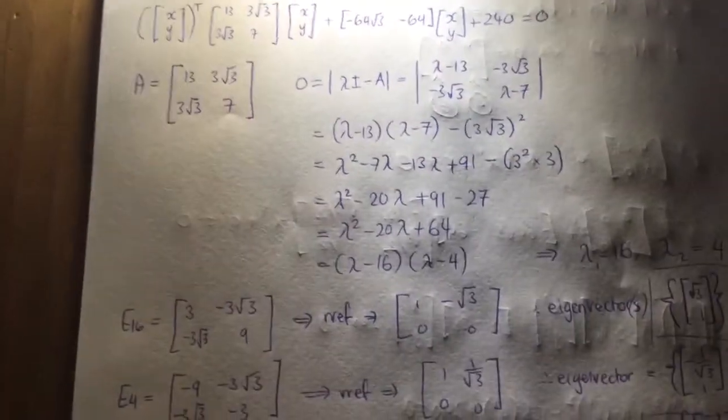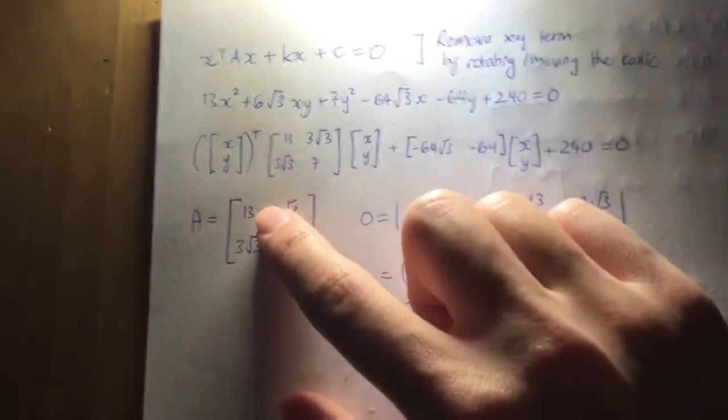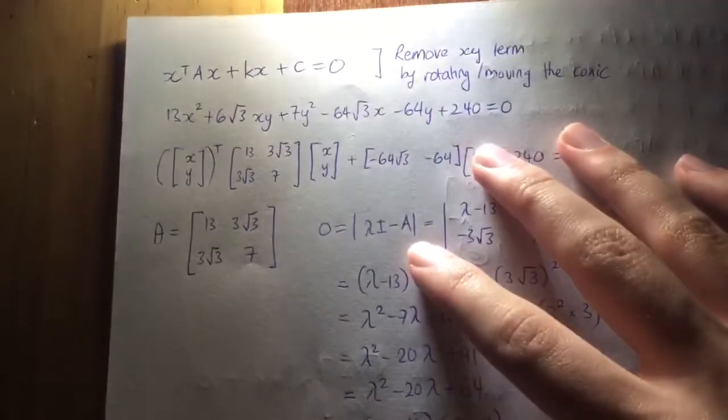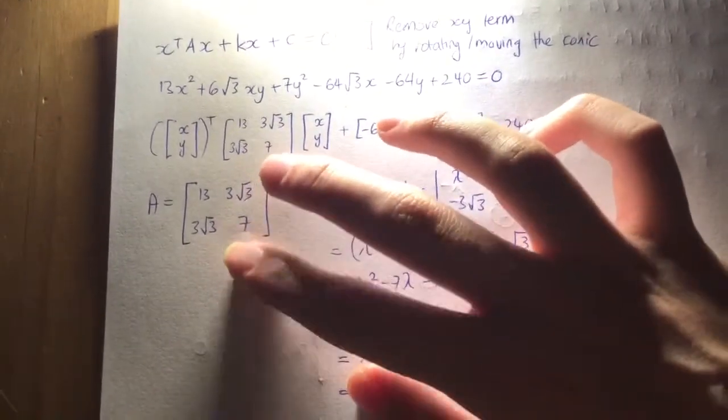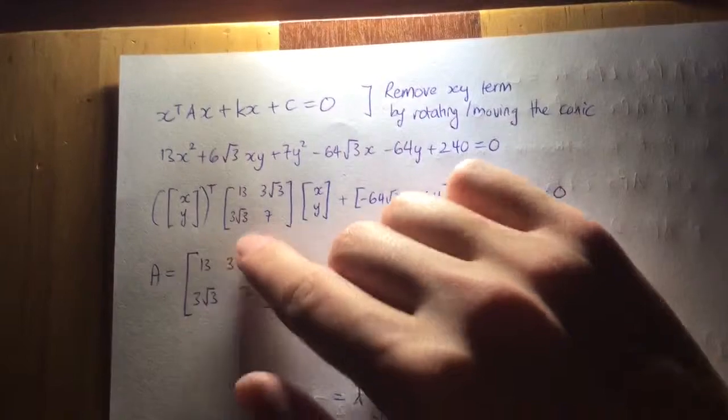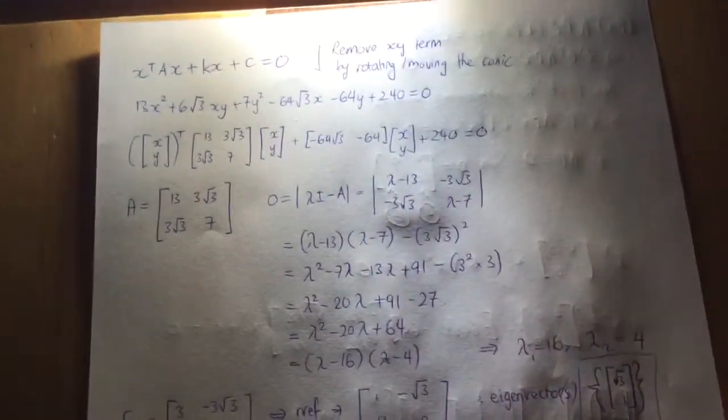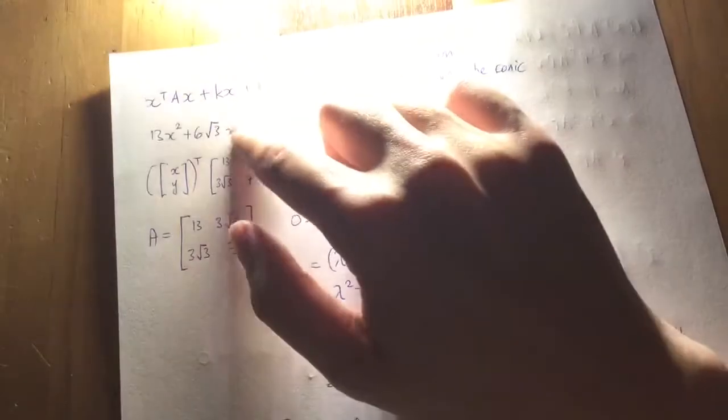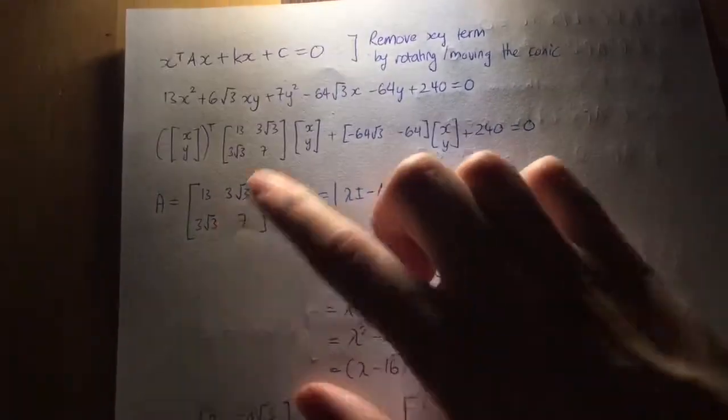There's that xy term just there, 6√3xy, that's basically stopping us from having a really intuitive way of being able to draw this conic or work with this conic. We're really used to dealing with x squareds and y squareds and then completing the square. In this case, xy is really stopping us. So that's what we want to get rid of, and the way we get rid of that is using eigenvalues and eigenvectors and normalizing them. So we start with the matrix A.